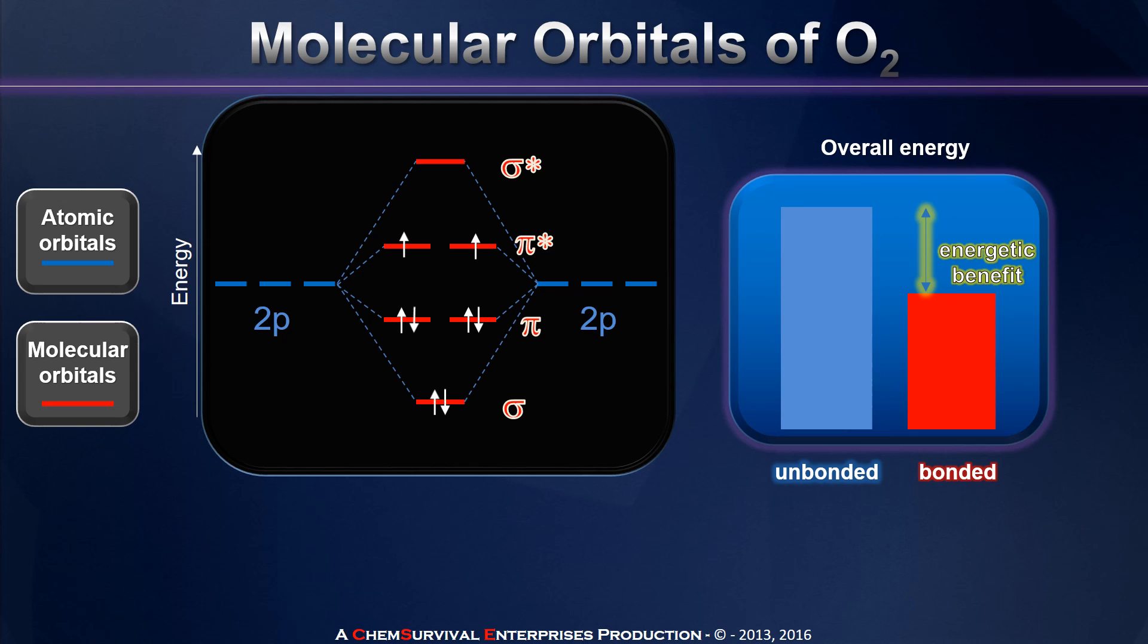But even more importantly than that possibly is this. Notice that there are unpaired electrons in this molecule. And that means that our new oxygen molecule is paramagnetic. Liquid oxygen can be trapped within the confines of a powerful magnet. You may have seen this demonstration done before. And of course, just as before, our prediction is correct.